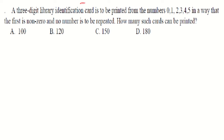The first question: a three-digit library identification card is to be printed from the numbers 0, 1, 2, 3, 4, 5 — six digits from 0 to 5 — in a way that the first digit is non-zero and no number is to be repeated. How many such cards can be printed?